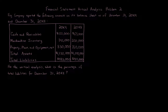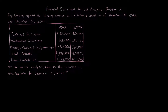Financial statement vertical analysis problem 2. FIG company reported the following amounts on its balance sheet as of December 31st 20x9 and December 31st 20x8. The information is presented in a table with 20x9 and 20x8 columns. Cash and receivables: 20x9 $155,000; 20x8 $65,000. Merchandise inventory: 20x9 $145,000; 20x8 $250,000. Property, plant and equipment net: 20x9 $830,000; 20x8 $760,000. Total assets: 20x9 $1,130,000; 20x8 $1,075,000.